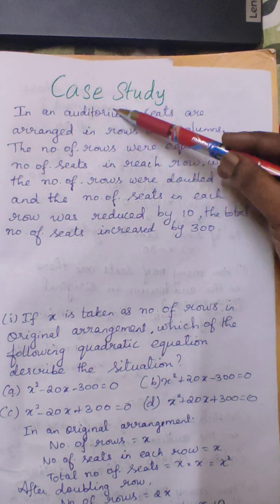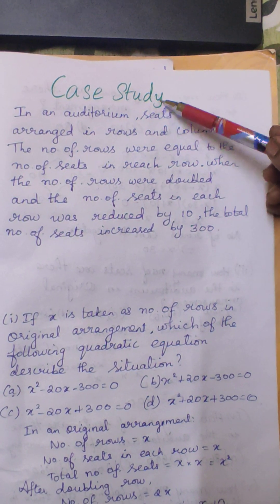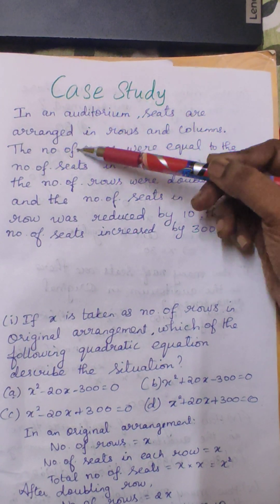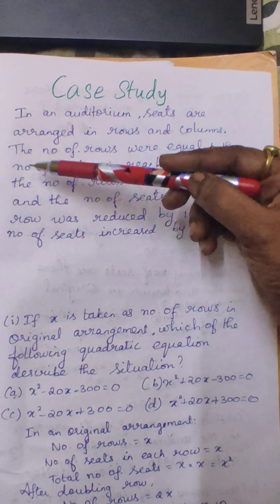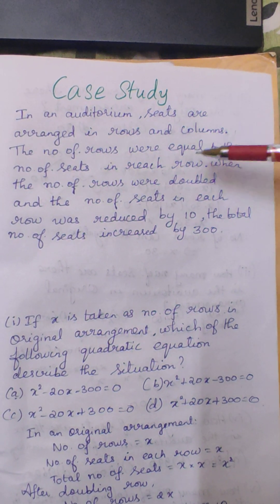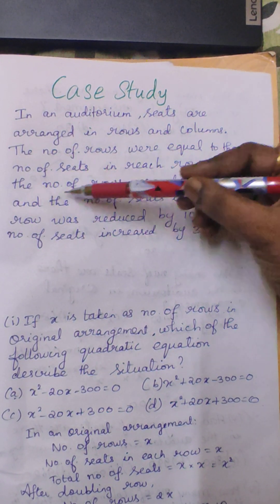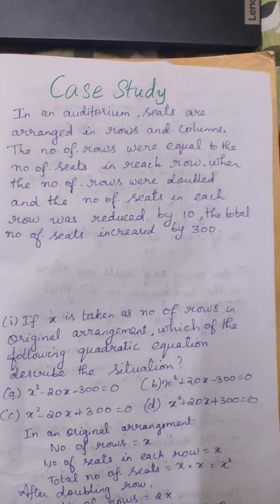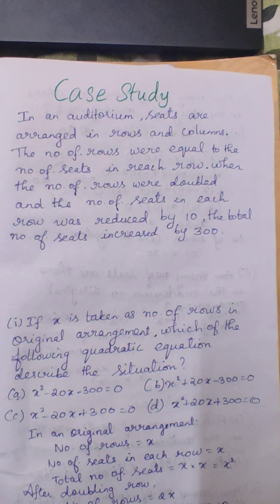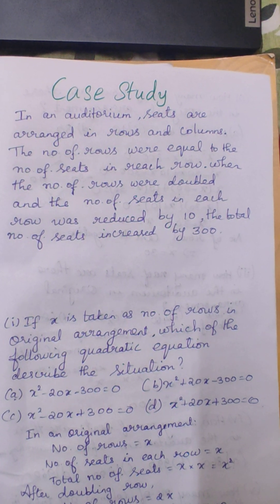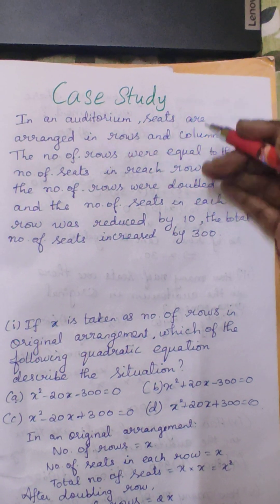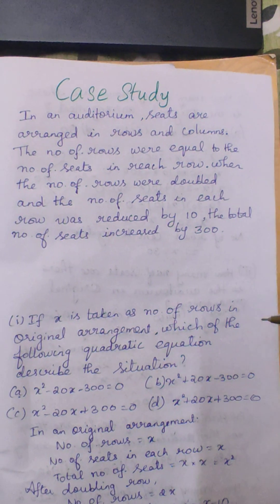Hello students, we will discuss this case study problem. Here they have given an auditorium where seats are arranged in rows and columns. The number of rows were equal to the number of seats in each row. When the number of rows were doubled and the number of seats in each row was reduced by 10, the total number of seats increased by 300.